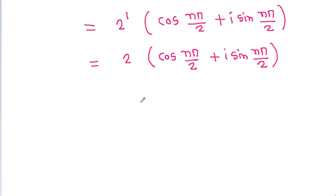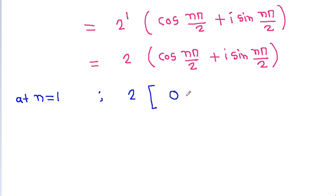At n equal to 1, it will be 2 times [cos(π/2) plus iota times sin(π/2)]. Since cos(π/2) is 0 and sin(π/2) is 1, that gives 2 times iota, which equals 2i.